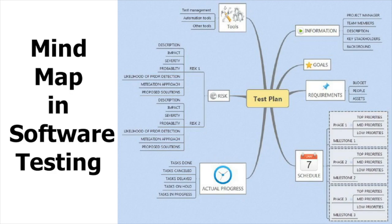All of these sub-ideas in turn have further components. For example, 'information' contains team members, project manager description, stakeholders, and background. Similarly, you can use mind maps for requirement traceability matrix, test coverage, test planning, creating test scenarios, use cases, team management, setting up responsibilities for team members, and setting milestones — weekly, monthly, or quarterly.